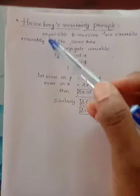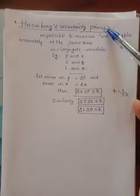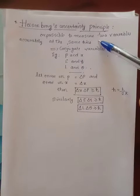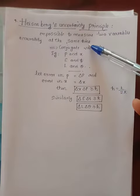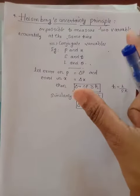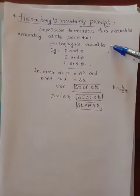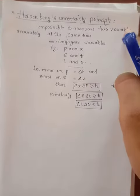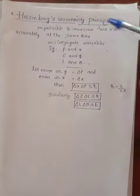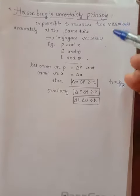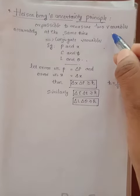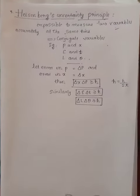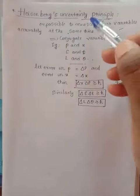The second basic of quantum mechanics is Heisenberg's uncertainty principle. According to this principle, it is impossible to measure two variables accurately at the same time. These two variables are known as conjugate variables. If we accurately measure one variable, then automatically there will be an error in the other variable. That is the concept of Heisenberg's uncertainty principle.